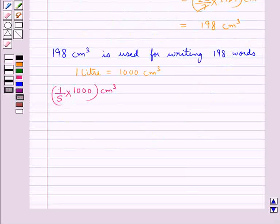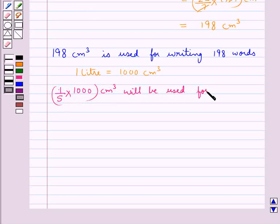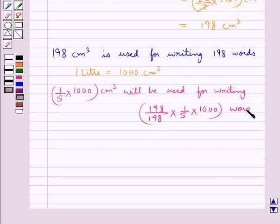Let's find out how many words would use up one-fifth of the liter of the ink. So 1/5 × 1000 cm³ will be used for writing (198/198) × (1/5) × 1000 words. 198 and 198 cancels, and 5 × 200 is 1000. So this comes out to be equal to 200 words.